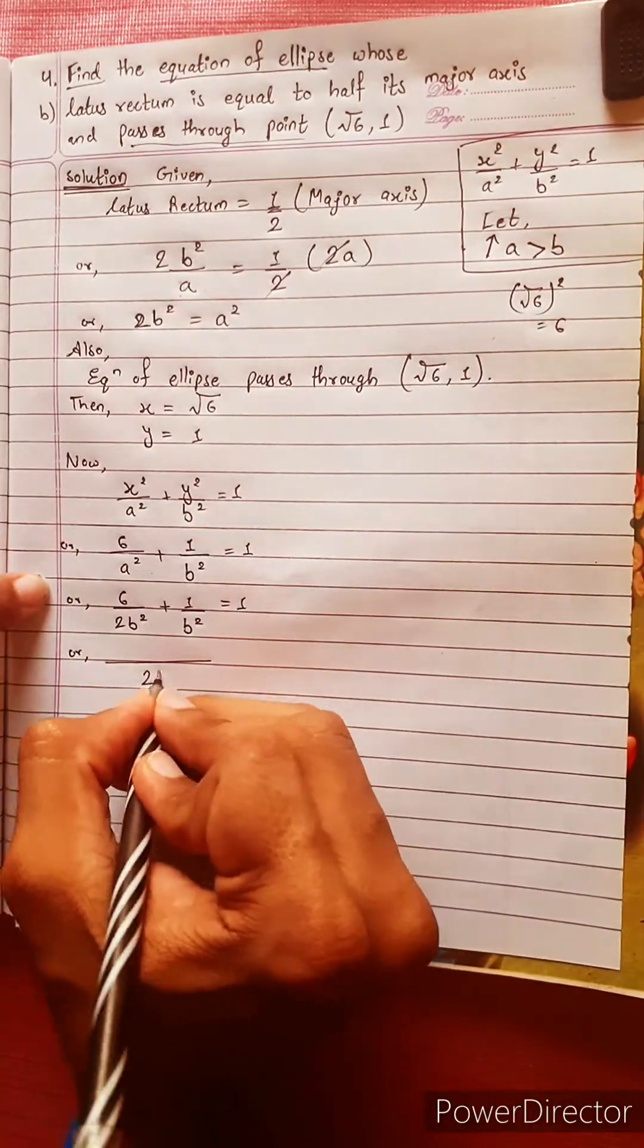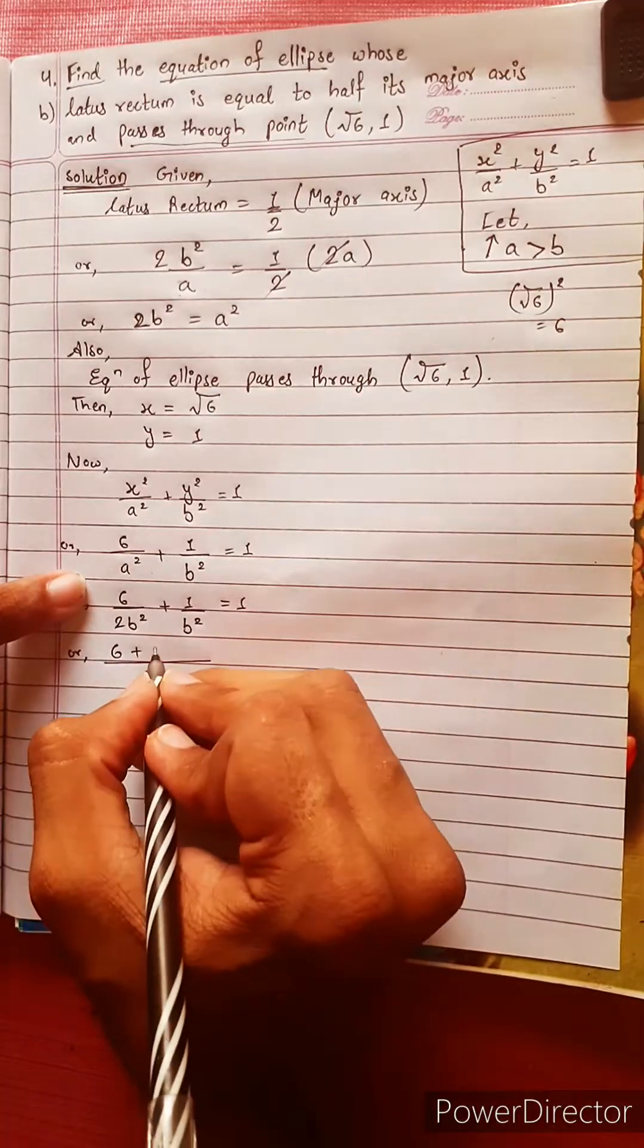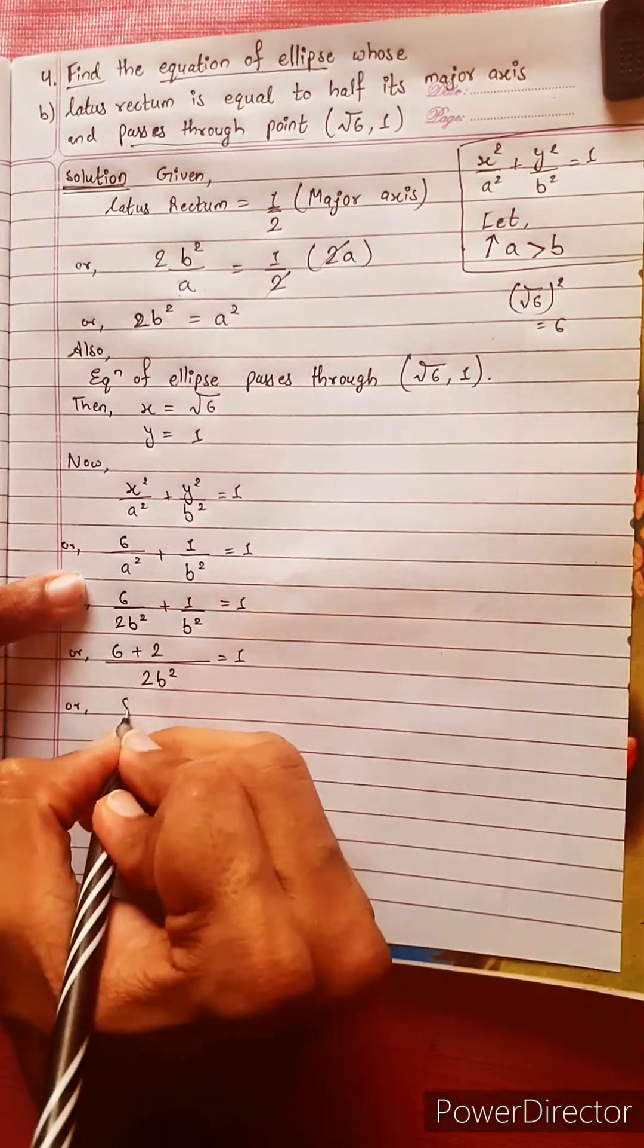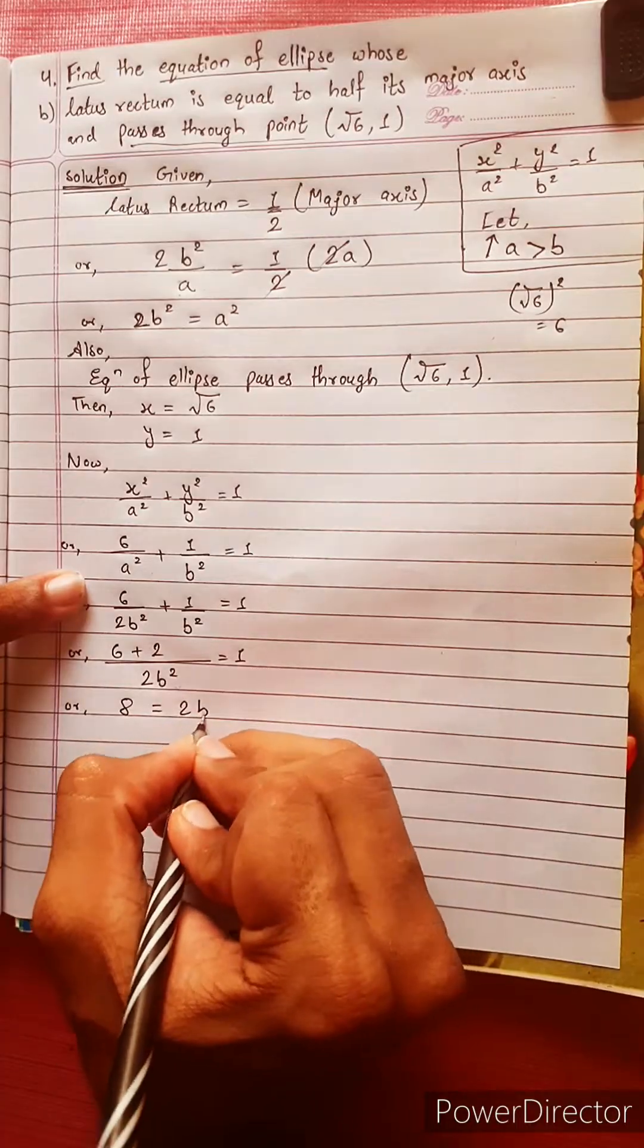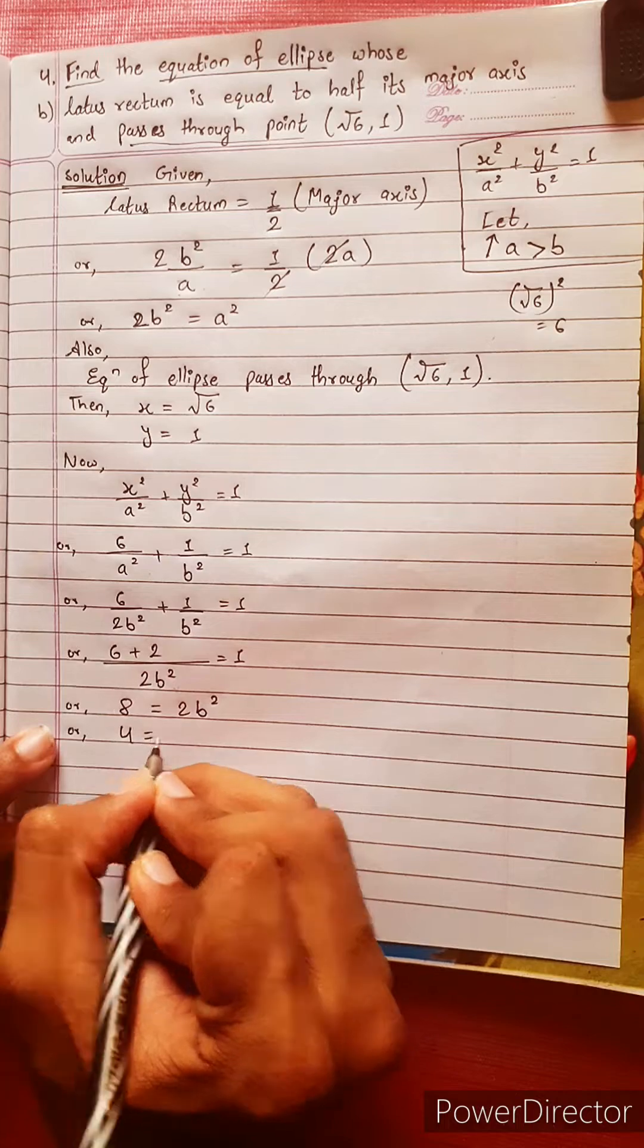This is common LCM 2b². This gives 6 plus 2 over 2b². Or 8 equals to 2b². Or 4 equals to b².